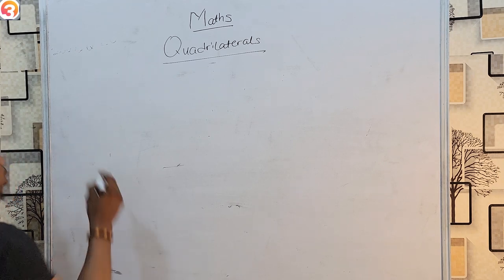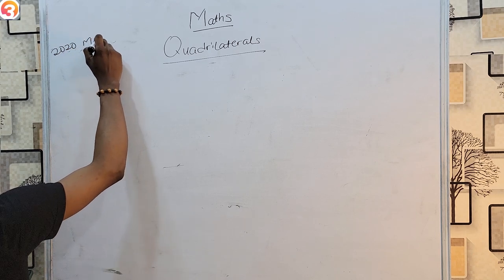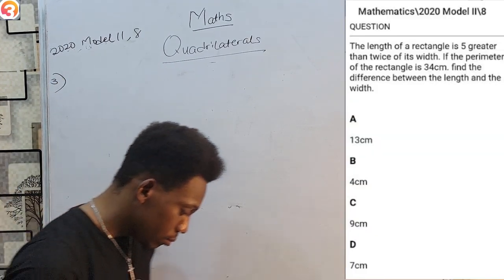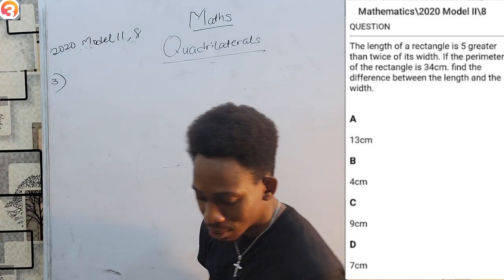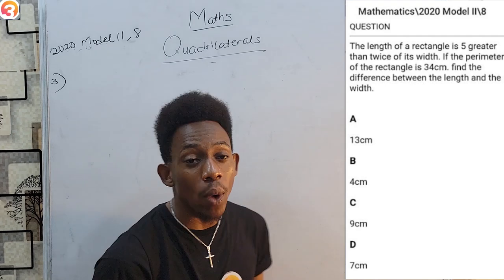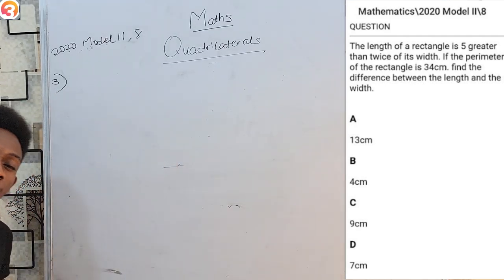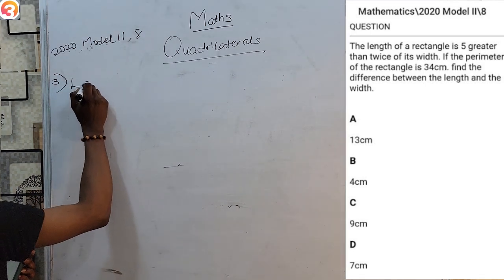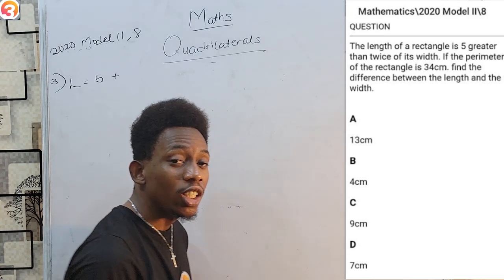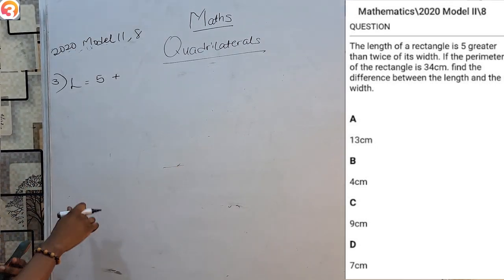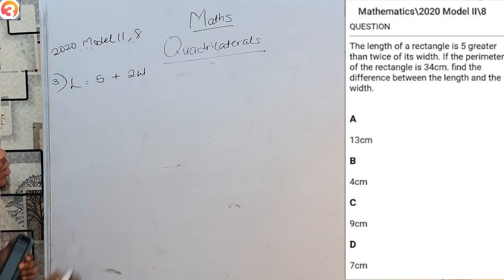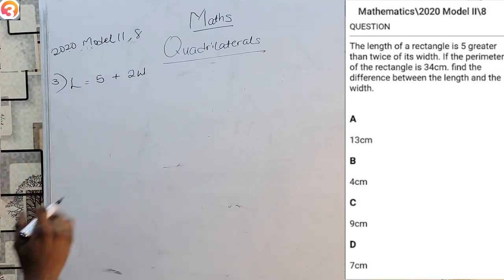Moving on, our next question is from the year 2020, Model 2, Question 8 — only on your O3Schools JAMB app. This one is given in story form and says: the length of a rectangle is five greater than twice its width. Twice its width means two times the width, and if the length is greater than that by five, then the length is five plus two times the width. So the length can be expressed as 5 + 2W.